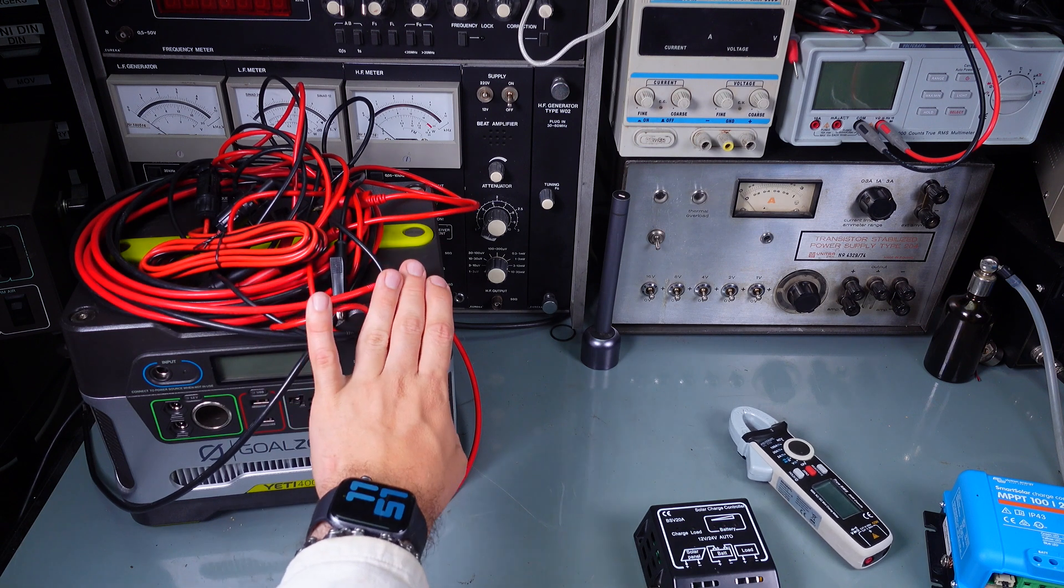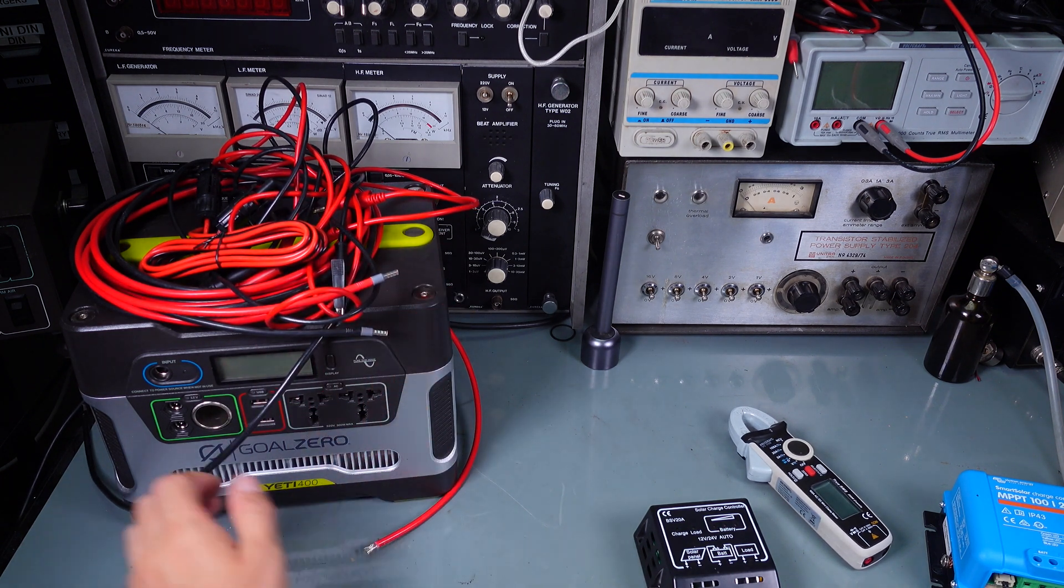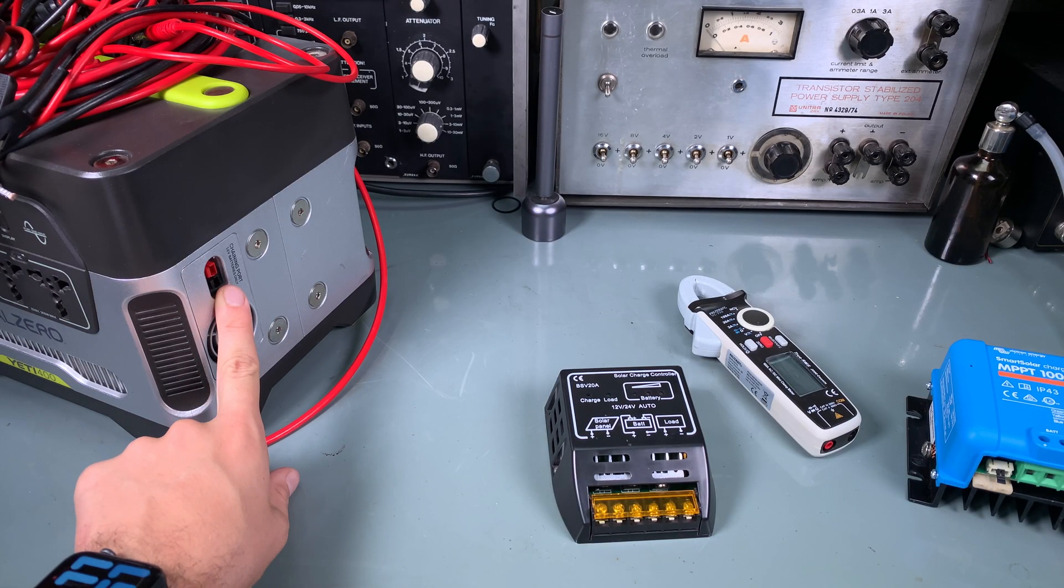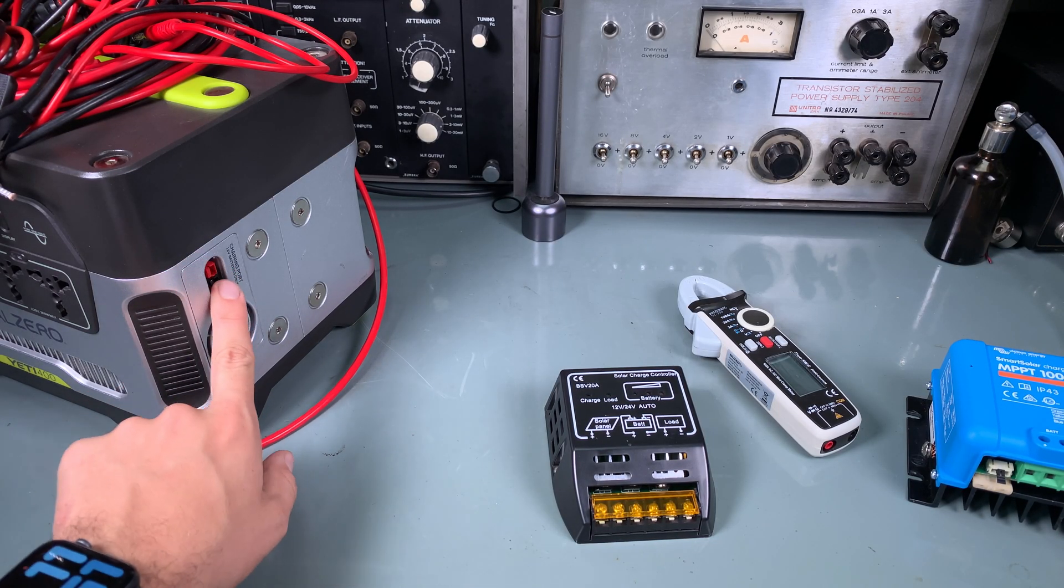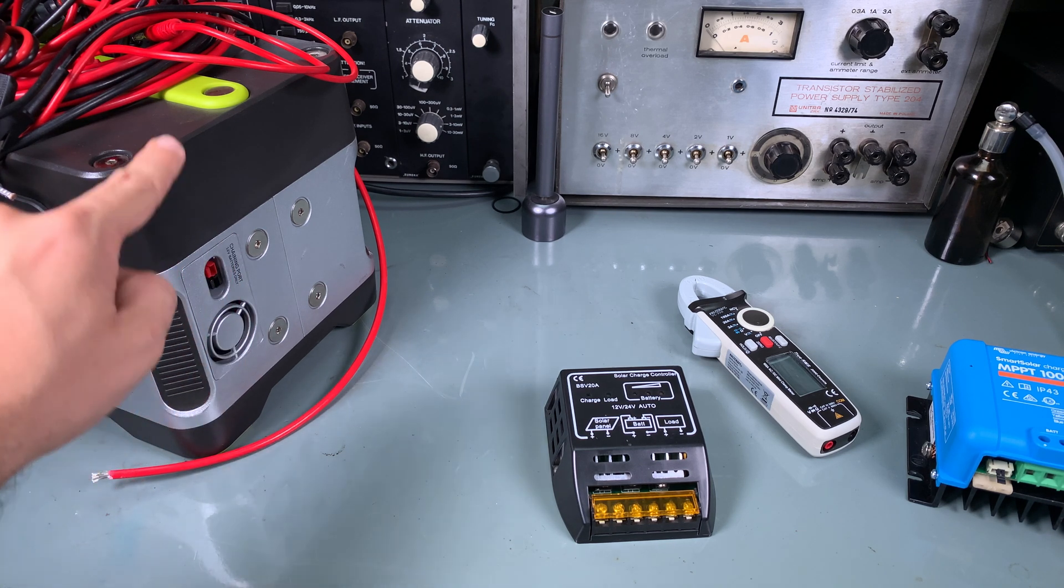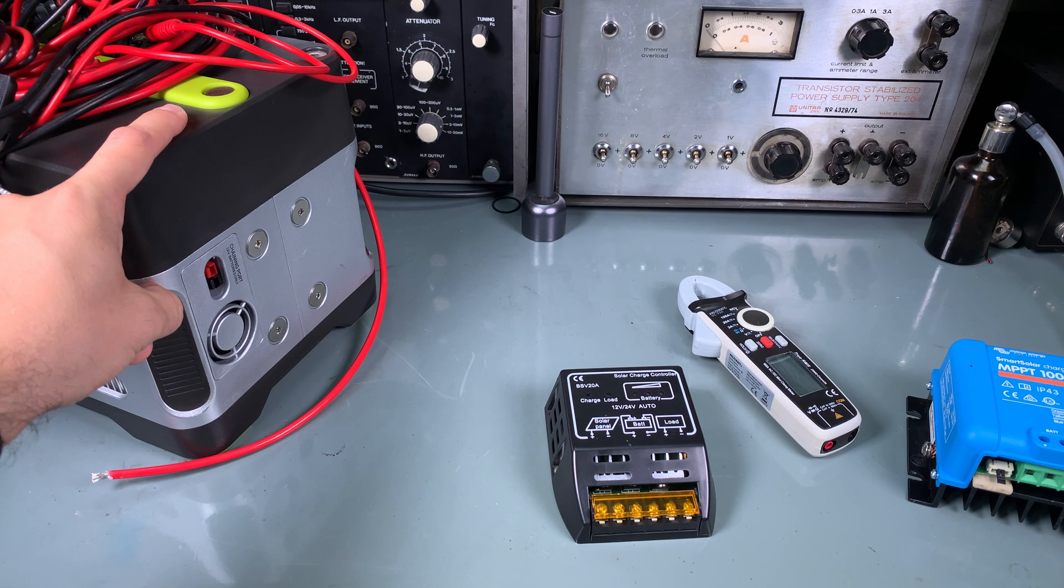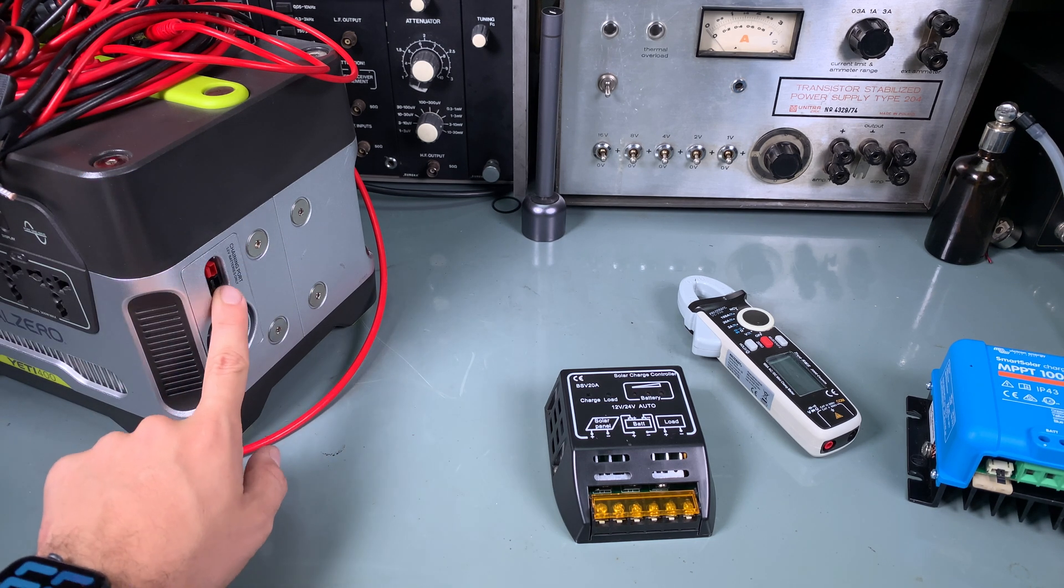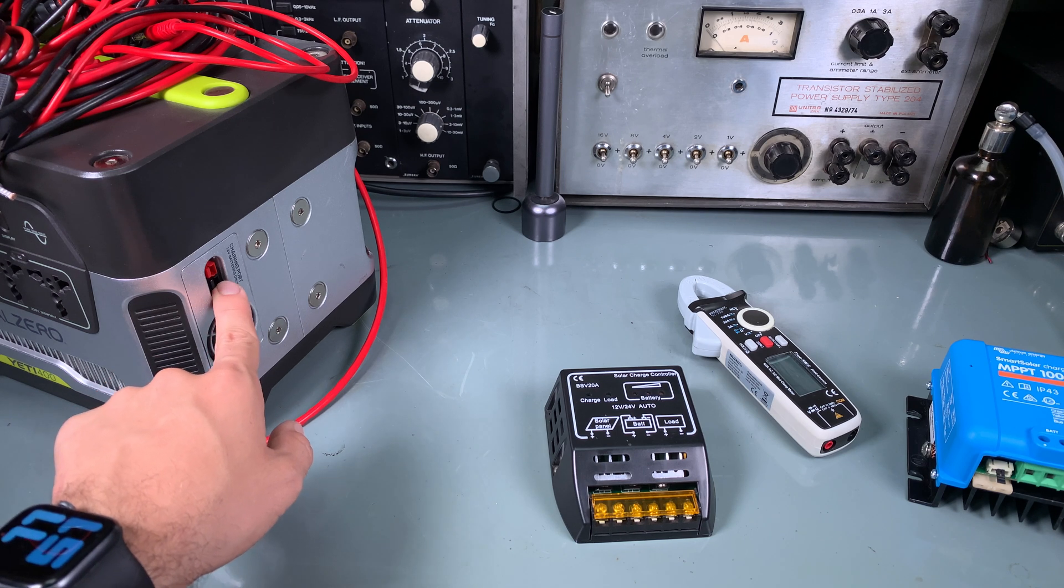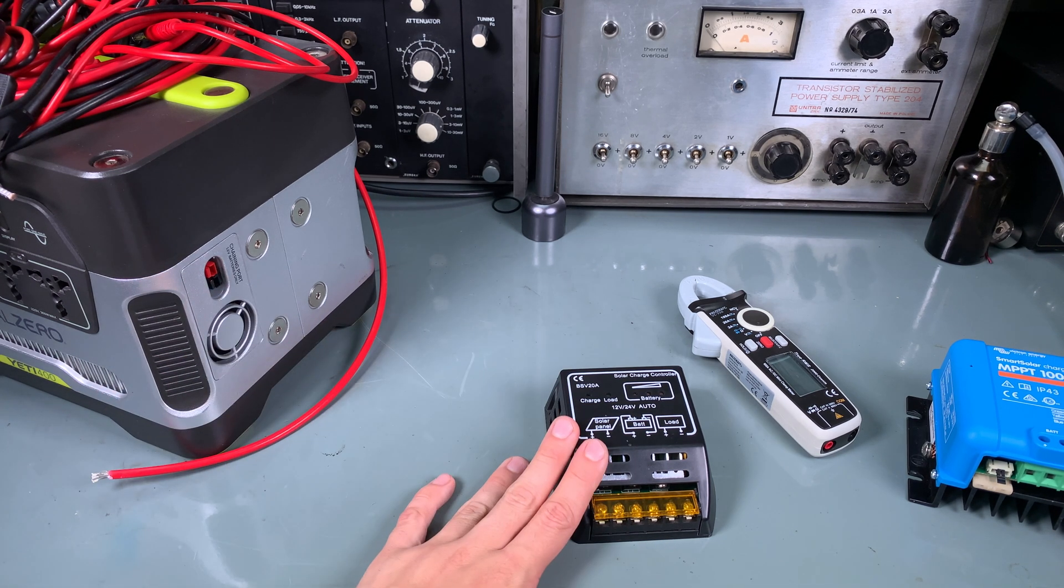I've got my Goal Zero Yeti 400 on the side port we've got the Anderson power port charging connectors and they go through a 50 amp fuse directly into the battery. So they make great option not only for chaining but for recharging our battery straight from a controller.